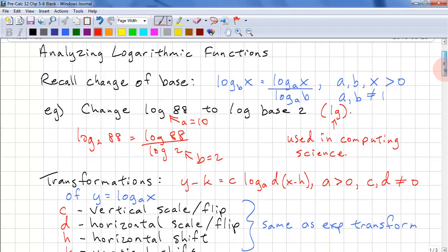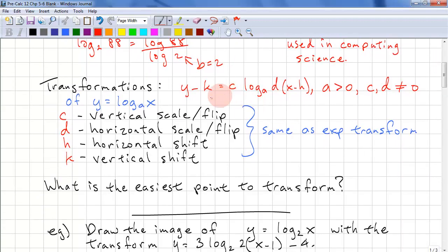Now we're going to do transformations again. So if we have y minus k equals c log_a(d(x minus h)), with restrictions a is greater than 0, c and d cannot be 0.